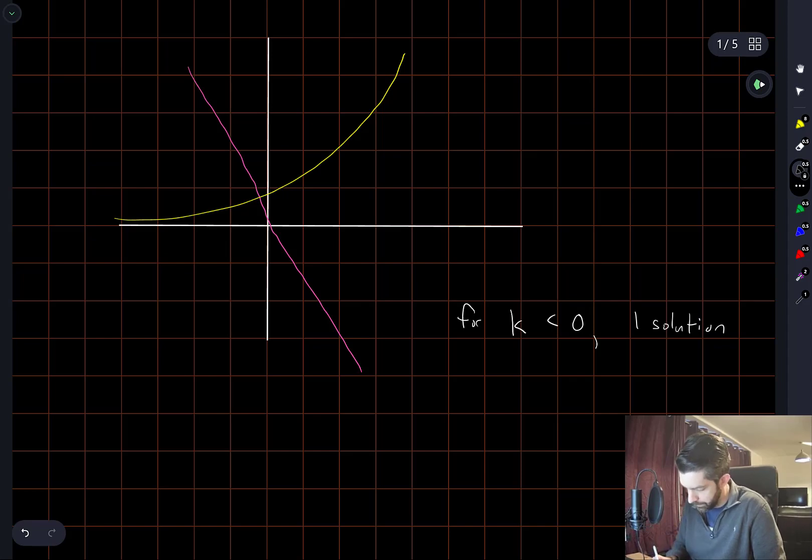In fact, I'll write down the relation that we're considering here in the first place: kx equals e to the x. So for k less than zero, there's only one solution.